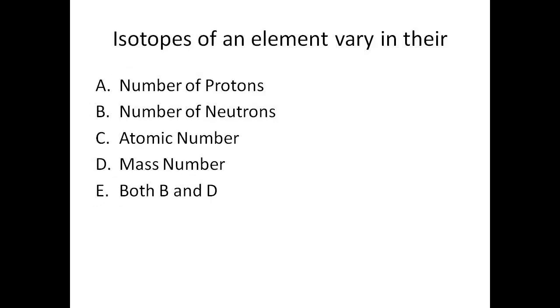Isotopes of an element vary in their number of protons, number of neutrons, atomic number, mass number, or both B and D?